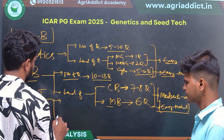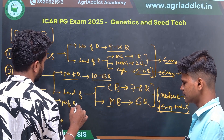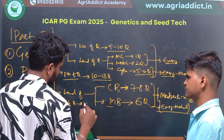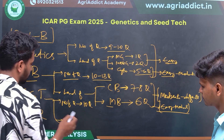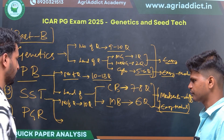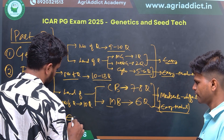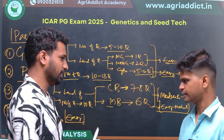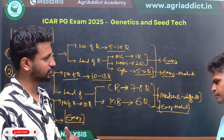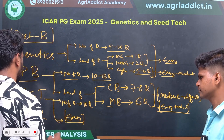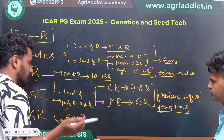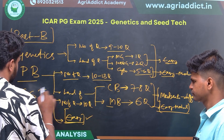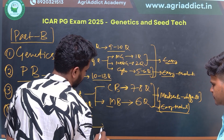Now for Seed Technology (Ctech): there were very few questions — a maximum of 9 to 10. The level of questions was very easy this time — direct questions were asked. For both Genetics and Plant Breeding students as well as Seed Science students, this part was particularly easy to answer.